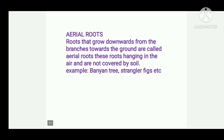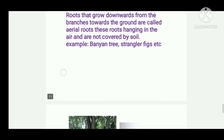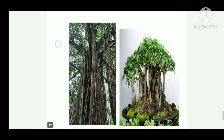Another type of root is aerial roots. The roots that grow downwards from the branches towards the ground are called aerial roots. These roots hang in the air and are not covered by soil. Examples are banyan tree, strangler figs, etc. You can see some images of aerial roots — they are above the ground and are hanging from the branches.